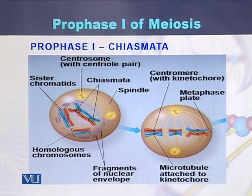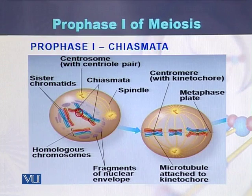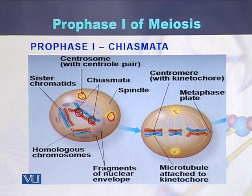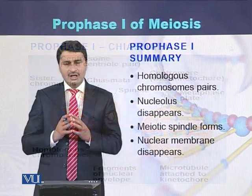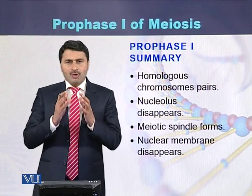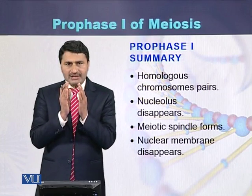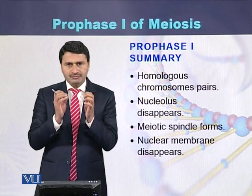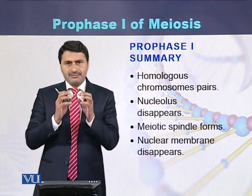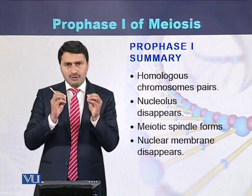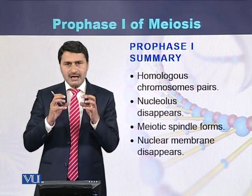In this diagram of Prophase I, chiasmata formation is visible between homologous chromosomes, centrioles have divided and arrived at the poles, and spindle fibers have been emitted from the centrioles and scattered in the cell. To summarize Prophase I: homologous chromosomes align with each other and exchange fragments; the nucleolus disappears; the nuclear membrane disappears; centrioles divide, move to the poles, and emit spindle fibers.